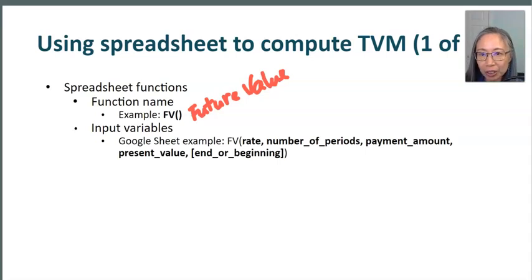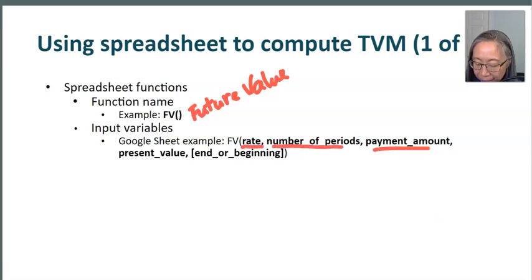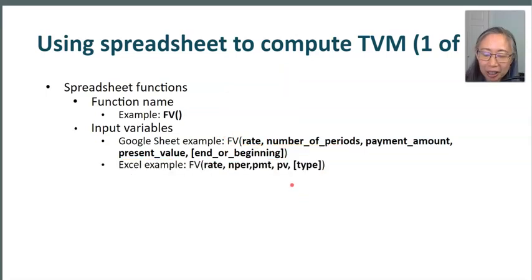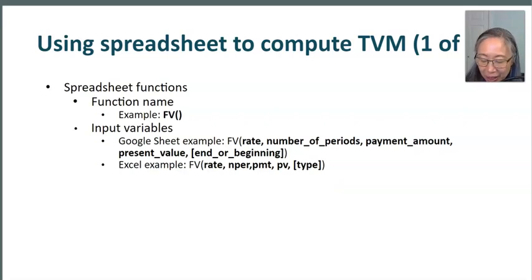The two main spreadsheet tools we'll use in this video are Google Sheets and Excel. Both have the exact same time value of money functions, and the names of the functions are the same — for example, both use FV to compute future value. However, the names of the input variables differ: Google Sheets tends to use more descriptive names, while Excel uses abbreviated names.